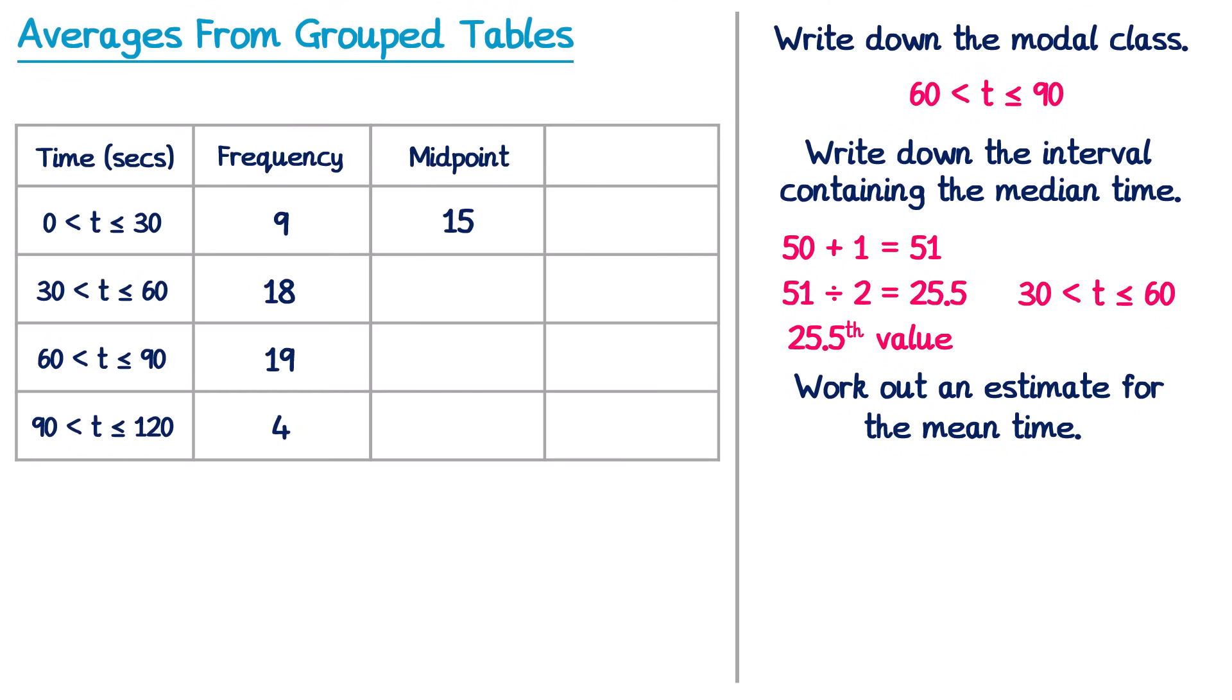Sometimes finding the midpoint of some intervals is a bit more difficult. If you're ever stuck finding the midpoint of an interval, you can just add together its endpoints and then divide it by 2. So the next interval goes from 30 to 60. So if we take these two values and add them together, you get 90, and then divide 90 by 2, you get 45. So halfway in between 30 and 60 is 45, and that's the midpoint. For the next interval you'd get 75, and the final interval would be 105.